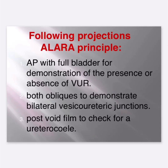The following projections are required: one, AP view with full bladder for demonstration of the presence or absence of VUR; two, both obliques to demonstrate bilateral vesicoureteric junctions; three, post-void film to check for a ureterocele.